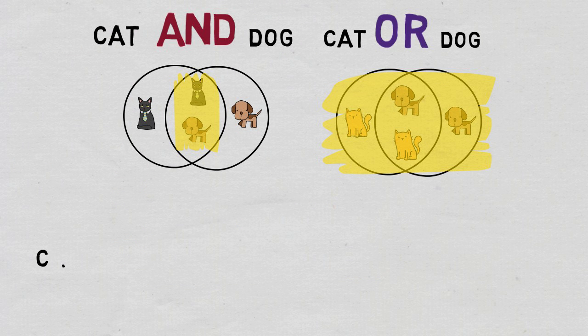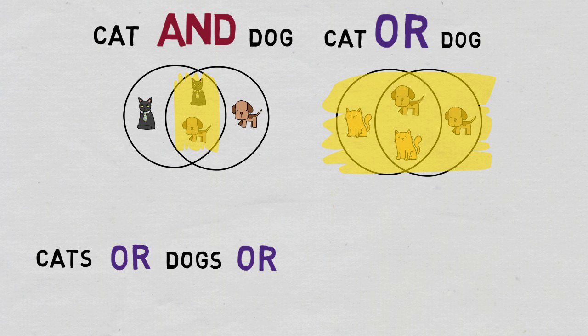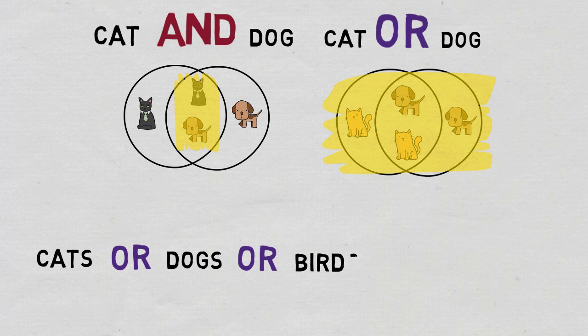For a more sophisticated search, combine the Boolean operators AND and OR. For example, let's say we want results about cats OR dogs OR birds, but we also want these results to address animal welfare.